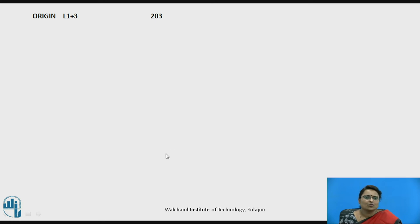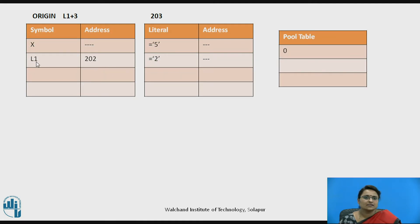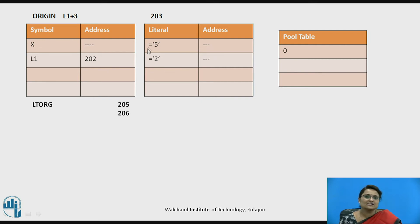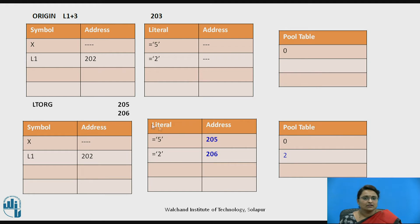The ORIGIN L1+3 statement assigns a value to the location counter. L1 is already known from the symbol table as 202, so plus 3 makes the current location counter value 205. The next statement is LTORG — literal's origin. Whatever literals were previously stored in the literal table are allocated by this LTORG; the current literal pool is 0. The addresses 205 and 206 are stored in the literal table for literals 5 and 2 respectively, and the pool table records that the next pool starts at position 2 in the literal table.